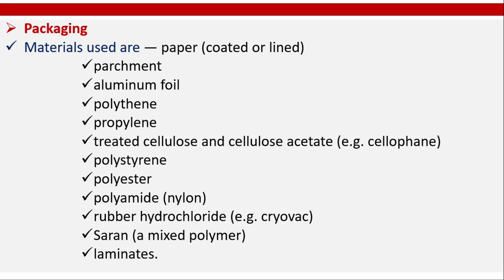Packaging materials used include paper, coated or lined parchment, aluminum foil, polythene, propylene, treated cellulose and cellulose acetate (e.g., cellophane), polystyrene, polyester, polyamide like nylon, rubber hydrochloride (e.g., Cryovac), Saran, mixed polymers, laminates, etc.